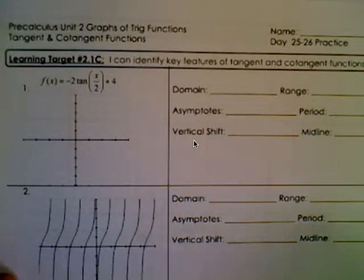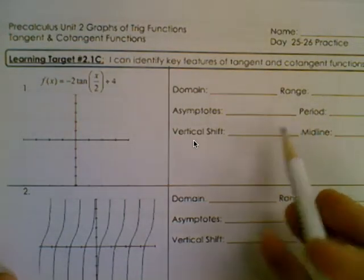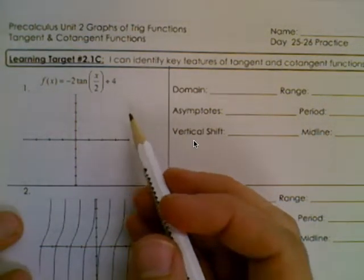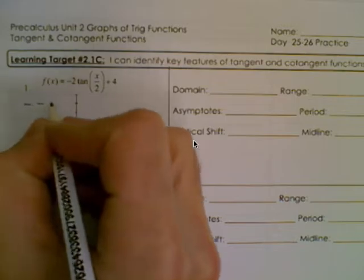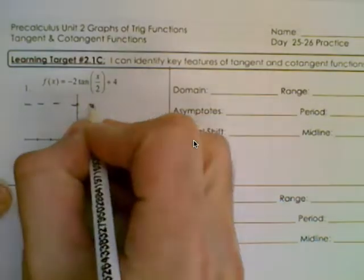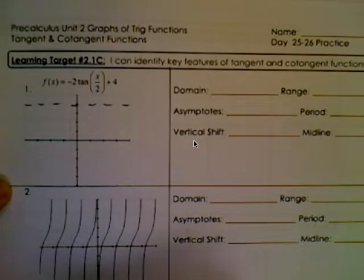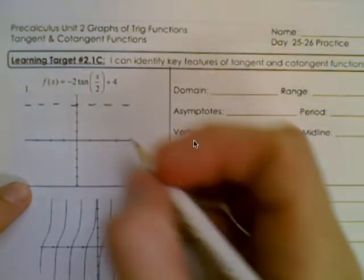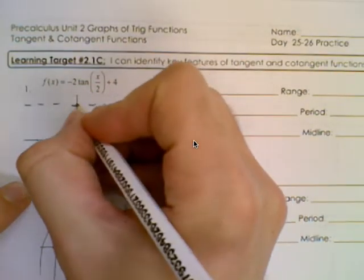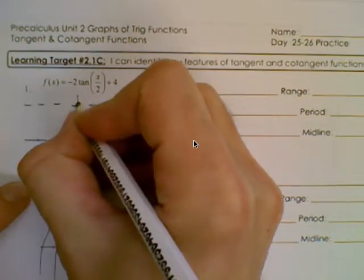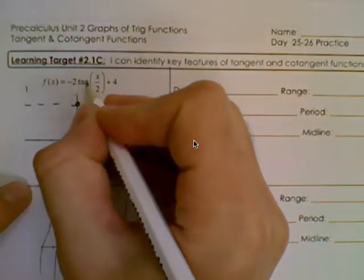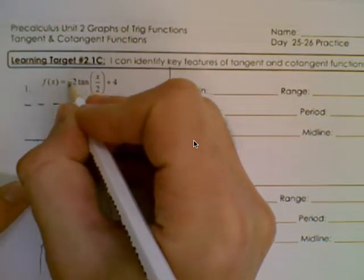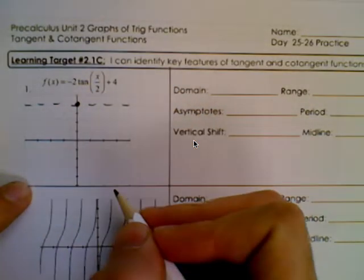We're supposed to find out all this information about this graph. First thing we should identify is it has a vertical shift up 4 and there's no horizontal shift. Then because we know it's tangent, you should know that tangent starts on the midline, and normally it would go up, but because there's a negative here, it's actually going to go downward.